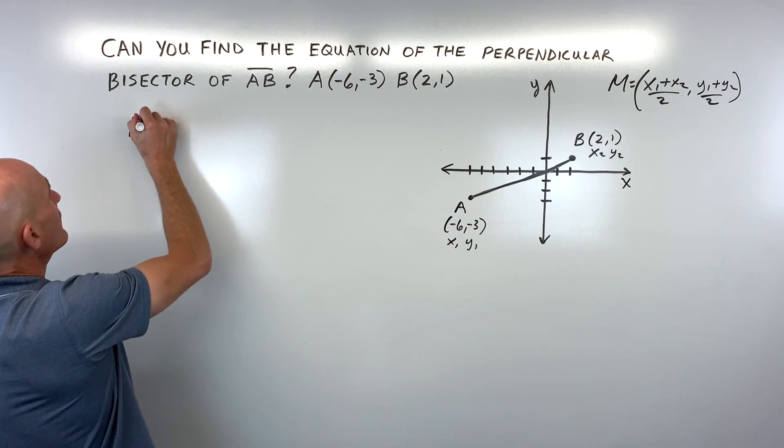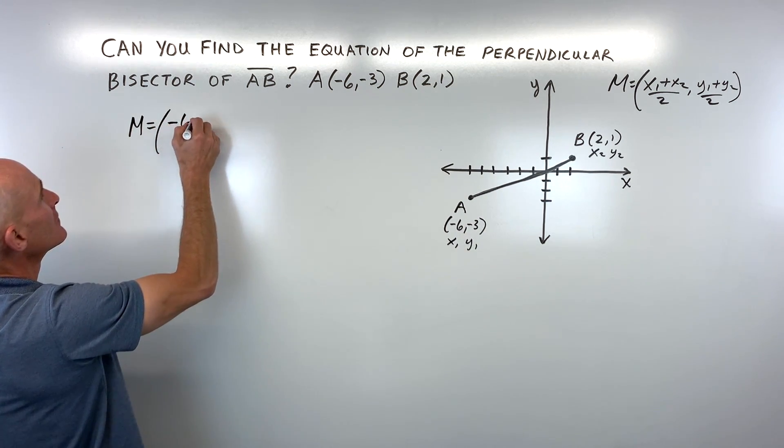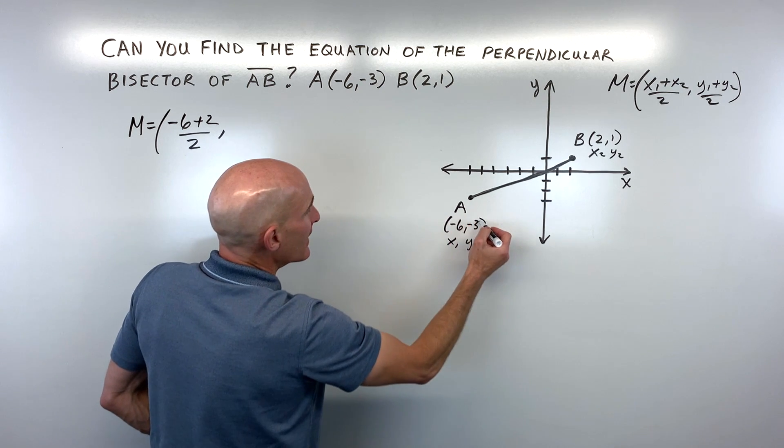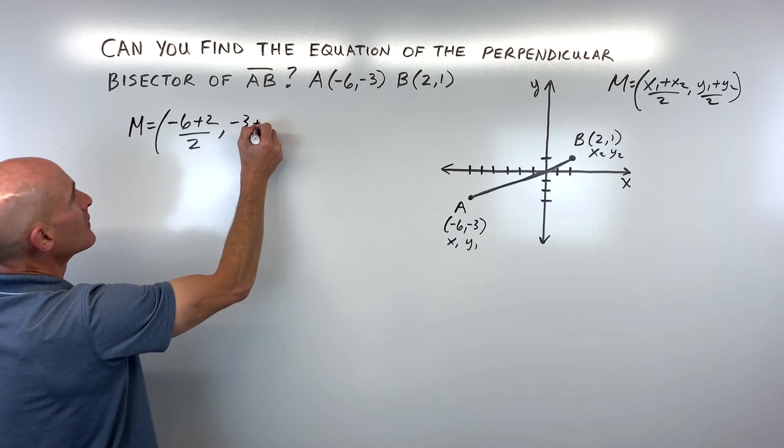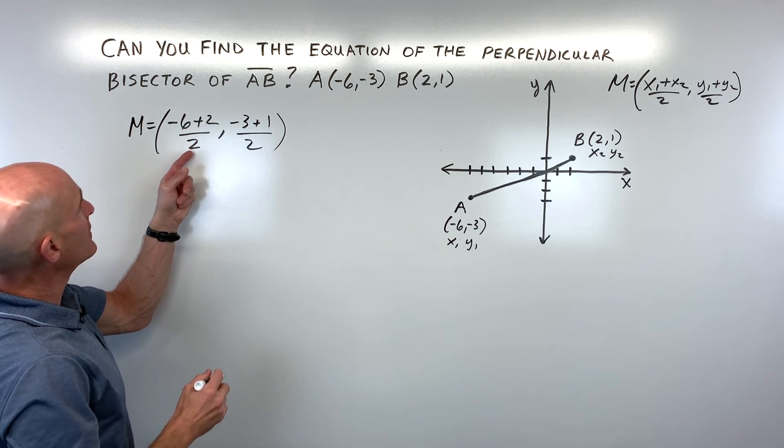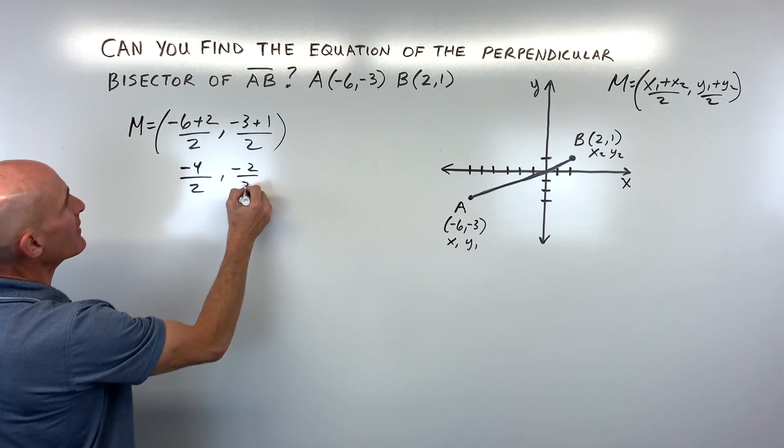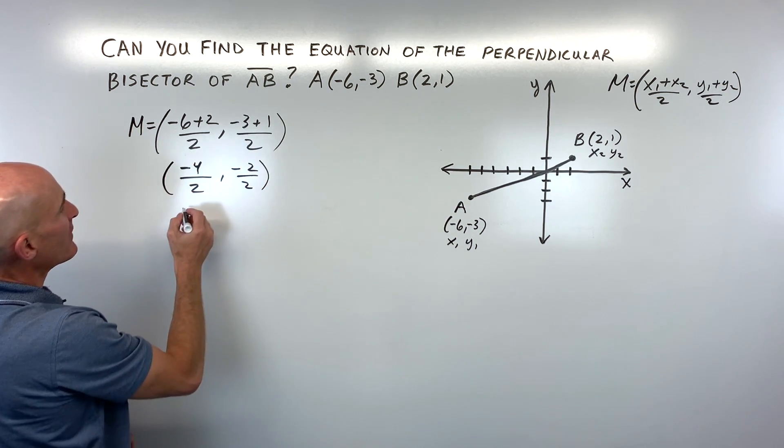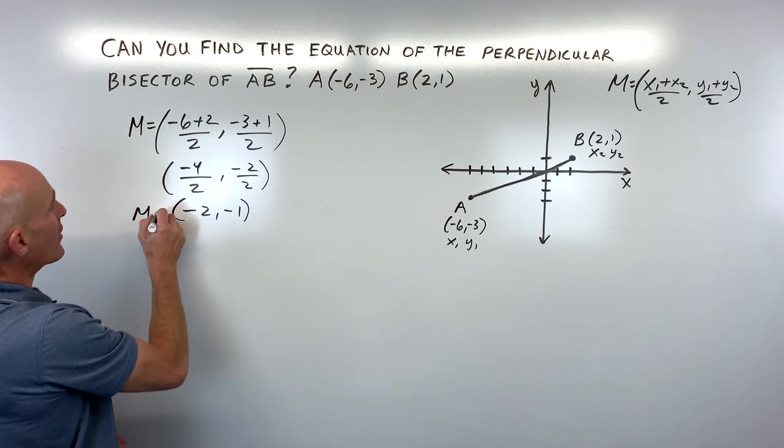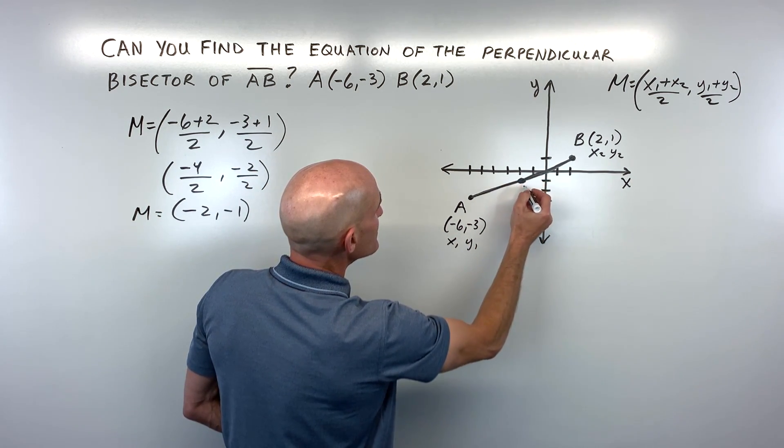Let's go ahead and find that midpoint. So we have negative 6 plus 2 divided by 2. It's like an average. And negative 3 plus 1 divided by 2. So if we simplify that further, we get negative 2 comma negative 1. That's our midpoint. Let's go ahead and graph that on here. So negative 2, negative 1 right there is our midpoint.